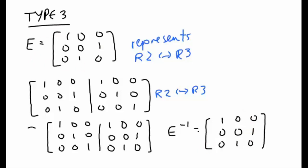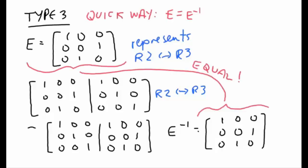They're actually the same matrix. So the quick way to find E inverse if you know you have a type 3 elementary matrix is nothing. We don't have to do anything. E and E inverse happen to be the same matrix only for type 3.